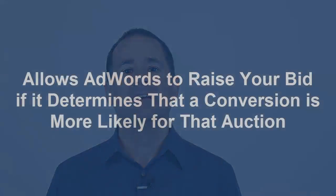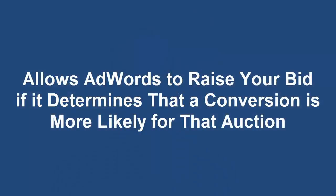Enhanced Cost Per Click is a bidding feature that gives AdWords a degree of flexibility in the ad auctions. Namely, it allows Google to raise your bid if it determines that a conversion is more likely. Enhanced Cost Per Click allows Google to raise your maximum cost per click bid up to 30%, and that's after applying any bid adjustments that you might have set.